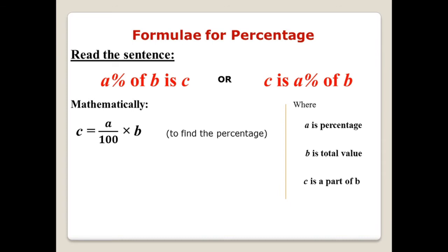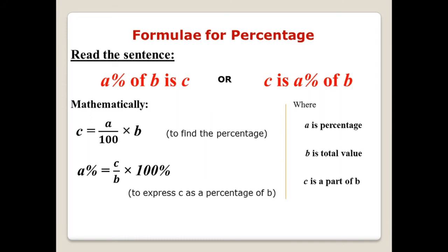Now if you convert this formula into another form — B is being multiplied here so you can divide it on the other side; 100 is being divided here so you can multiply on the other side — then a new formula will be formed: A percent equals C over B multiplied by 100. The percentage sign is applied here to mention that it is a percent number. This formula is used to express a number as a percentage of another one — in this case it's the expression of C as a percentage of B.